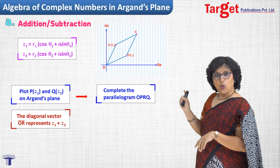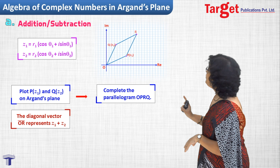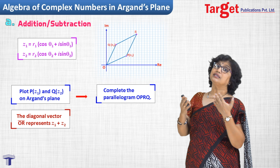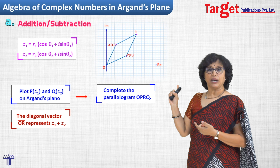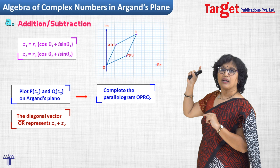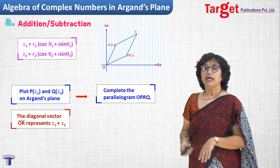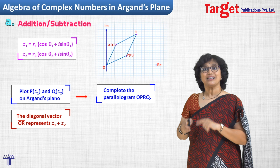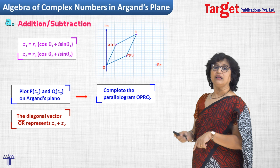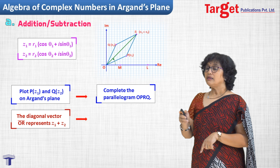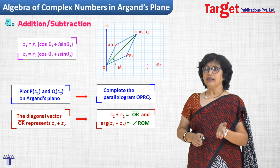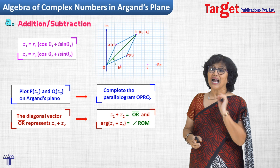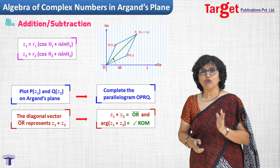Vector OP represents z1. Vector PR is in the same direction as OQ, and since it's a parallelogram, the length is also the same as OQ — so vector OQ equals vector PR. Therefore vector OP plus vector PR gives vector OR. The vector laws from physics apply here. So z1 plus z2 is represented by vector OR, and the argument of z1 plus z2 is the angle OR makes with the real axis.